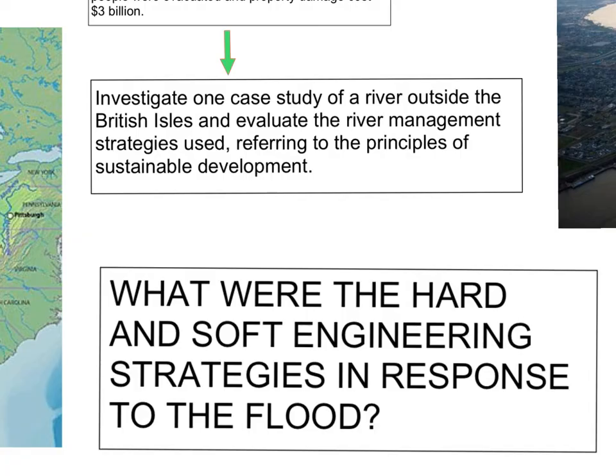The specification asks you to investigate one case study of a river outside the British Isles and evaluate river management strategies used, referring to principles of sustainable development. The key area is that it must be outside the British Isles, so it is not your Somerset case study. We must have positives and negatives, look at our strategies, and refer to the principles of sustainable development, which we'll come back to later.